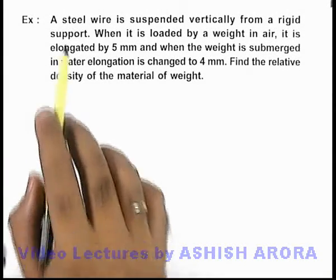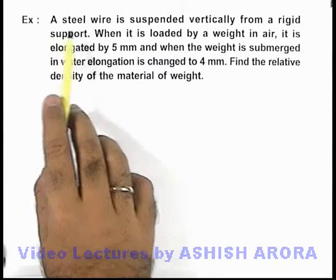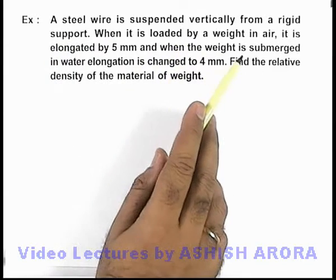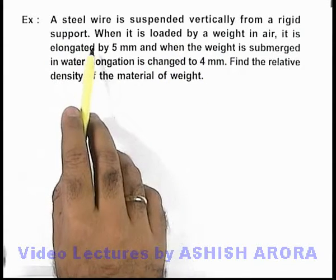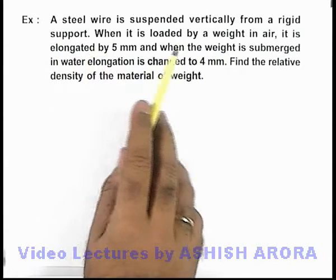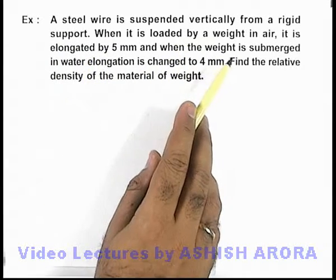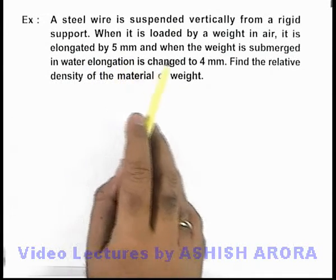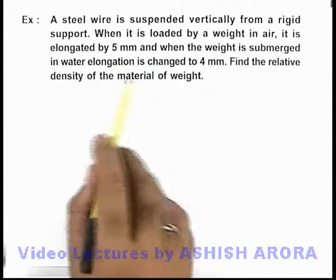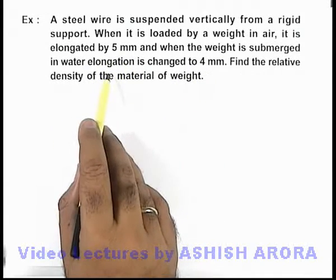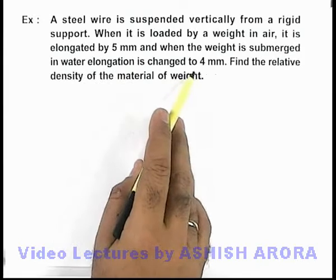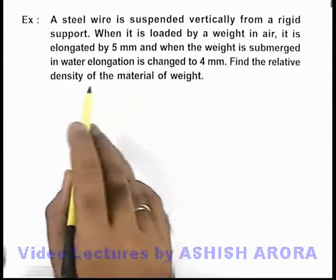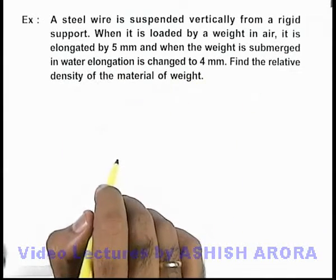In this example, we are given that a steel wire is suspended vertically from a rigid support. When it is loaded by a weight in air, it is elongated by 5 mm. When the weight is submerged in water, the elongation changes to 4 mm. We are required to find the relative density of the material of the weight.